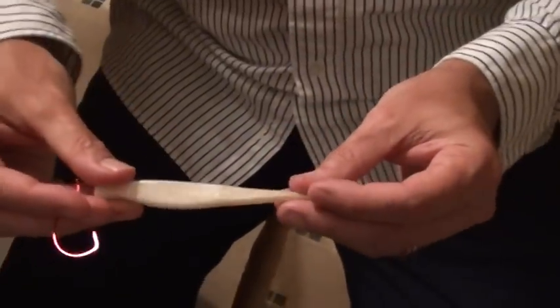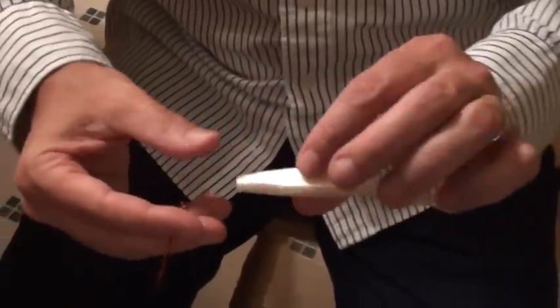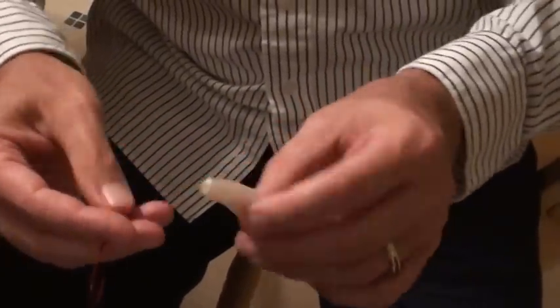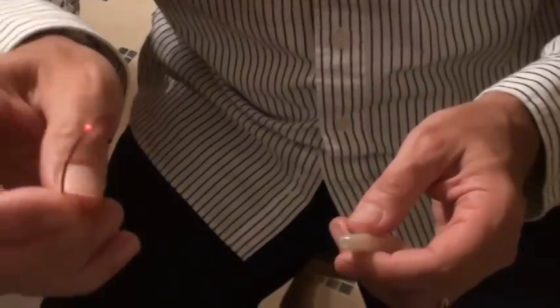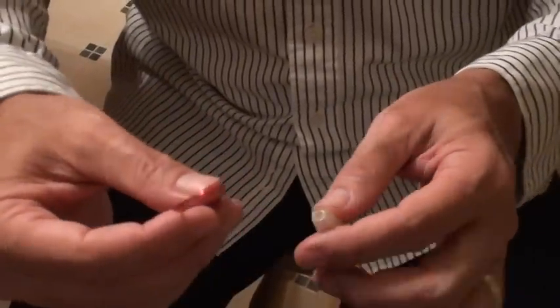In this video we're going to show how to rig a sinking salty shad in two different ways. This is the bait here. This is a three-aught extra wide gap hook. You can use a regular worm hook for this purpose as well.